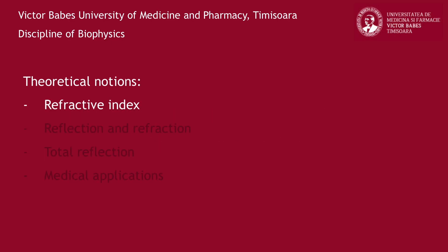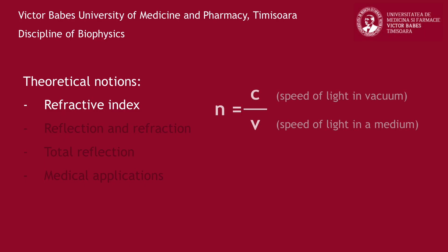Light travels in different mediums at different speeds. Thus, for a given wavelength, we can characterize any optical medium with a physical quantity called refractive index, which is equal to the ratio of the speed of light in vacuum to the speed of light in that medium. This index value is always greater than 1, since the speed of light in vacuum is the maximum possible speed. Apart from the light's wavelength, the refractive index of solutions depends on their concentration and temperature.